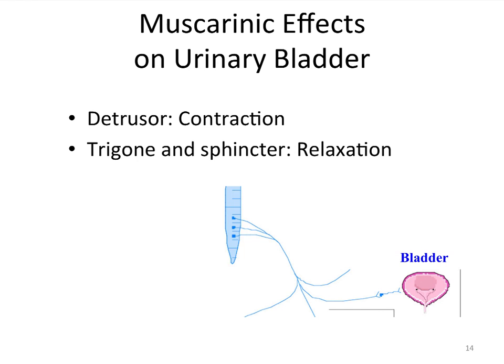Another important clinical issue is the urinary bladder. The bladder itself is stimulated by muscarinic agonists, while the trigone and sphincter are relaxed — so you're contracting against lower resistance. This is countered by the alpha receptors of the sympathetic nervous system, which control increasing sphincter tone. This is an example of the opposing effects of the parasympathetic and sympathetic nervous systems at the bladder.